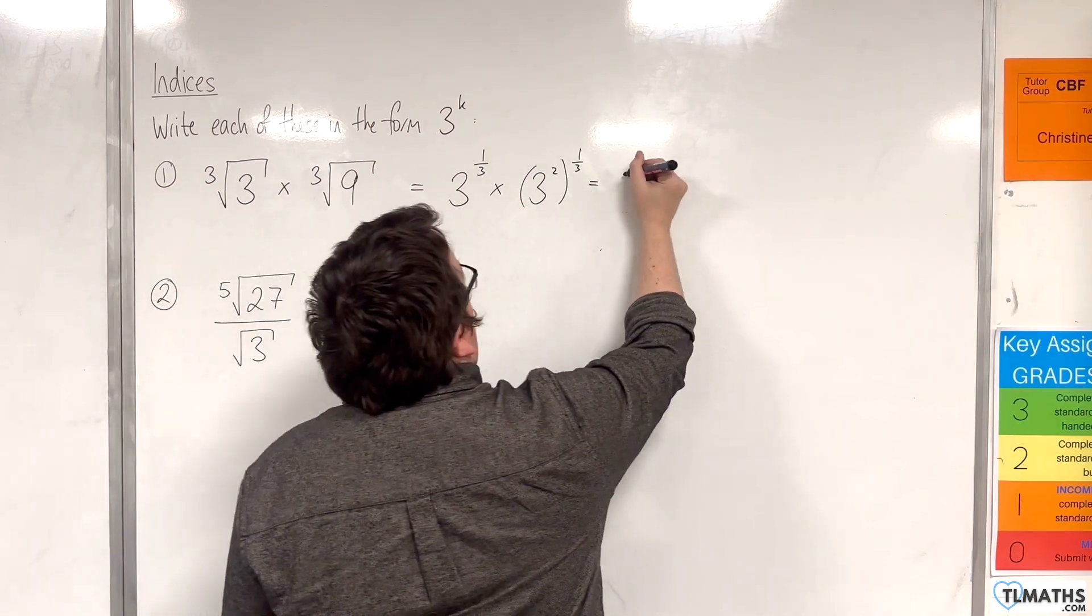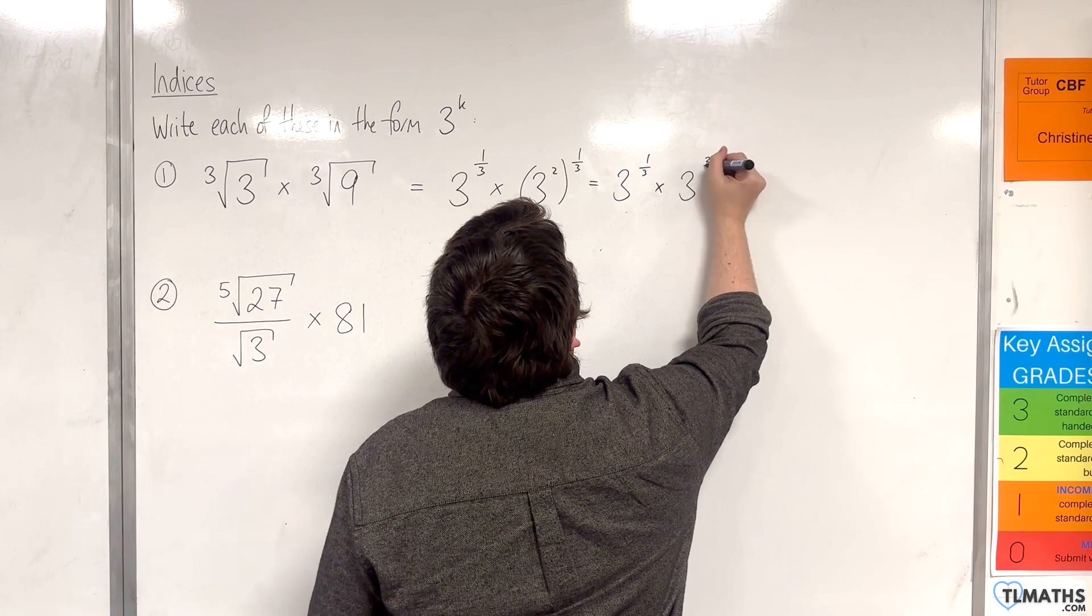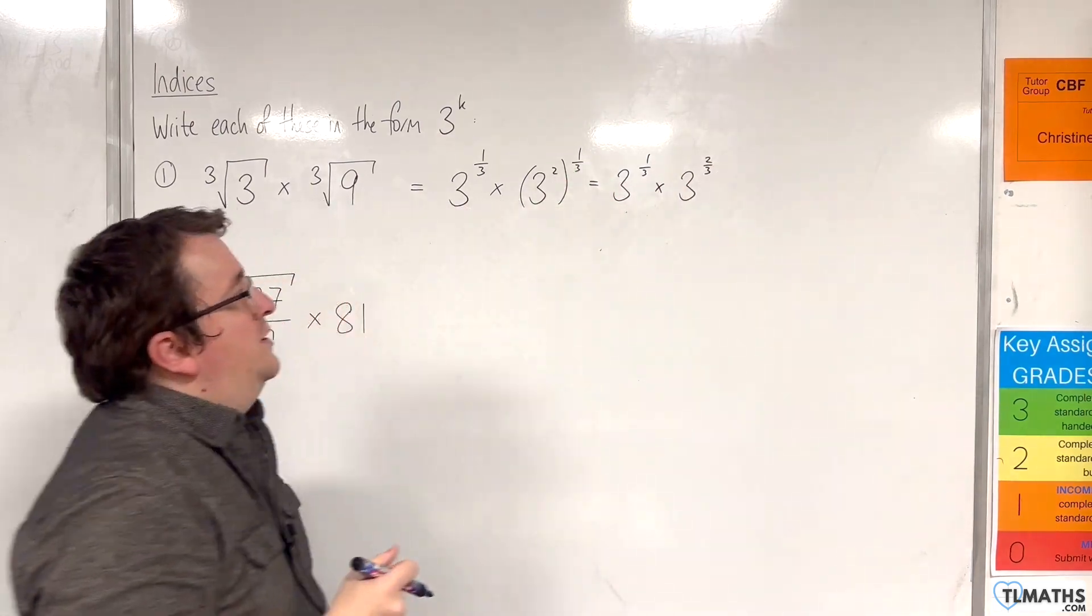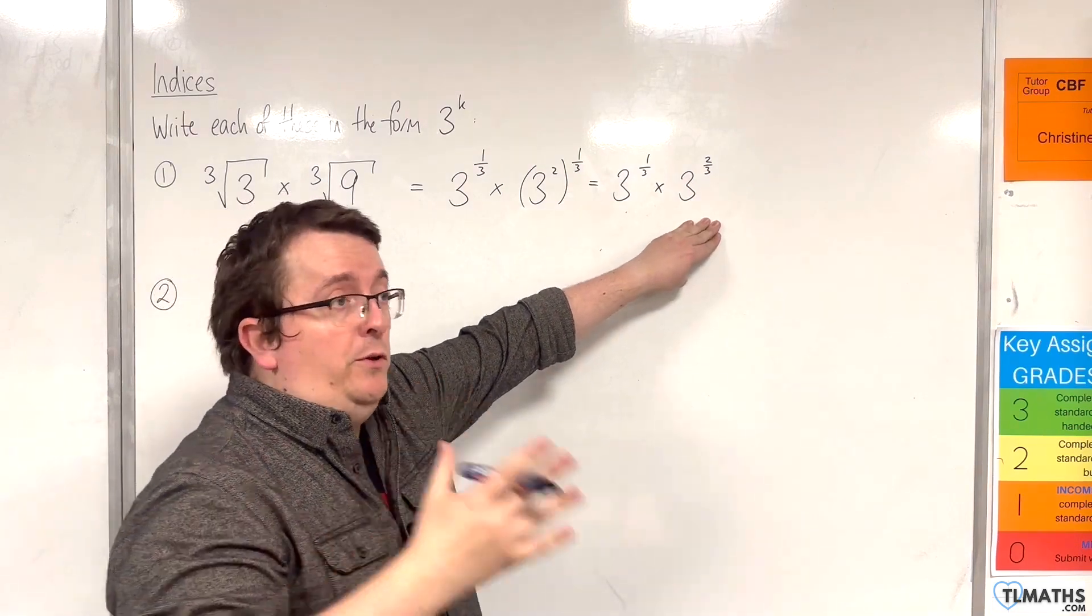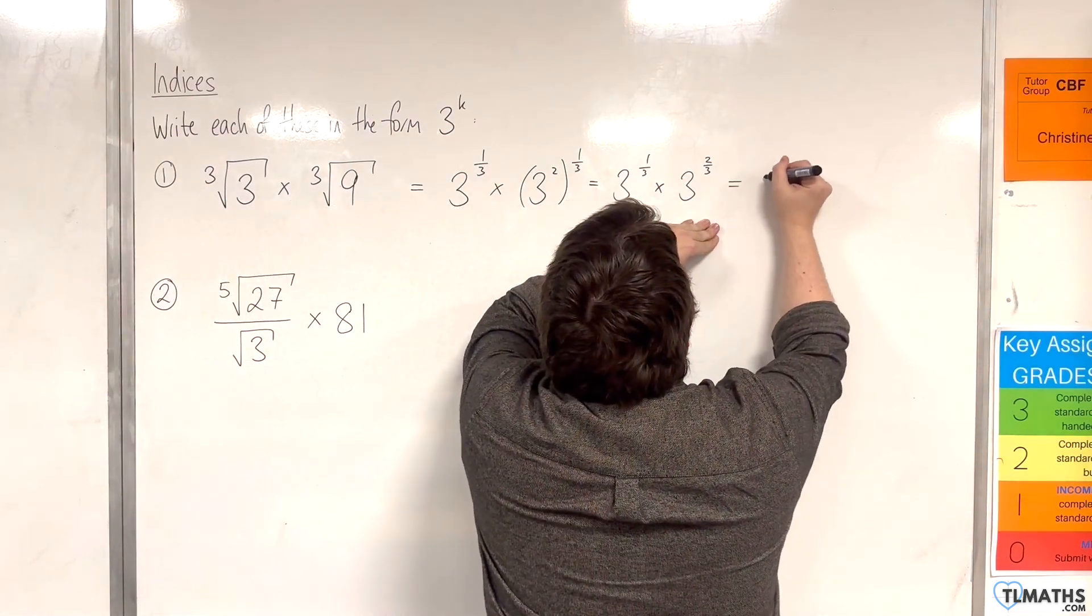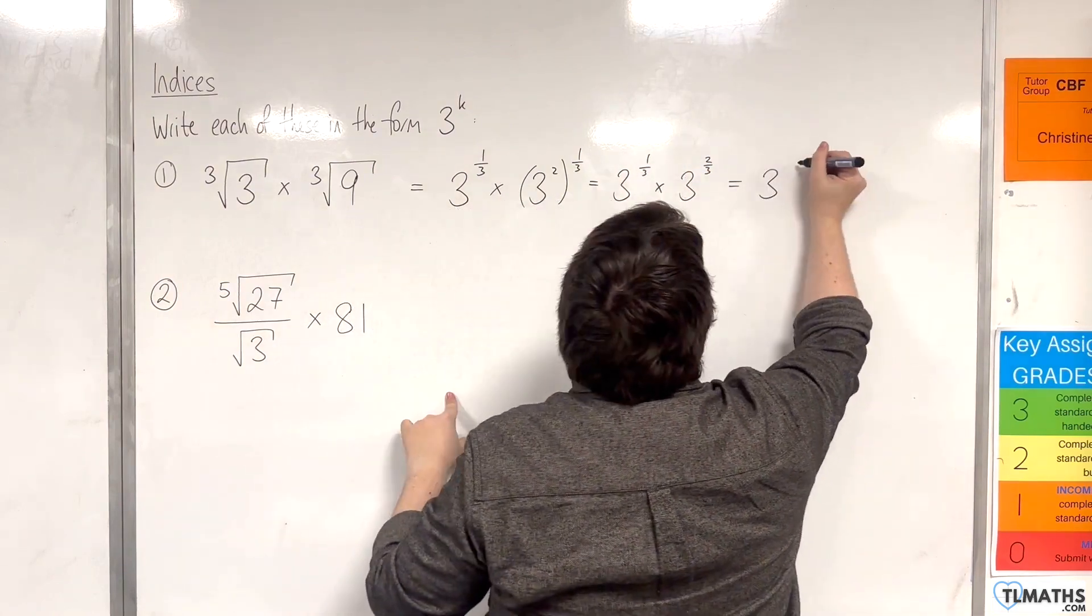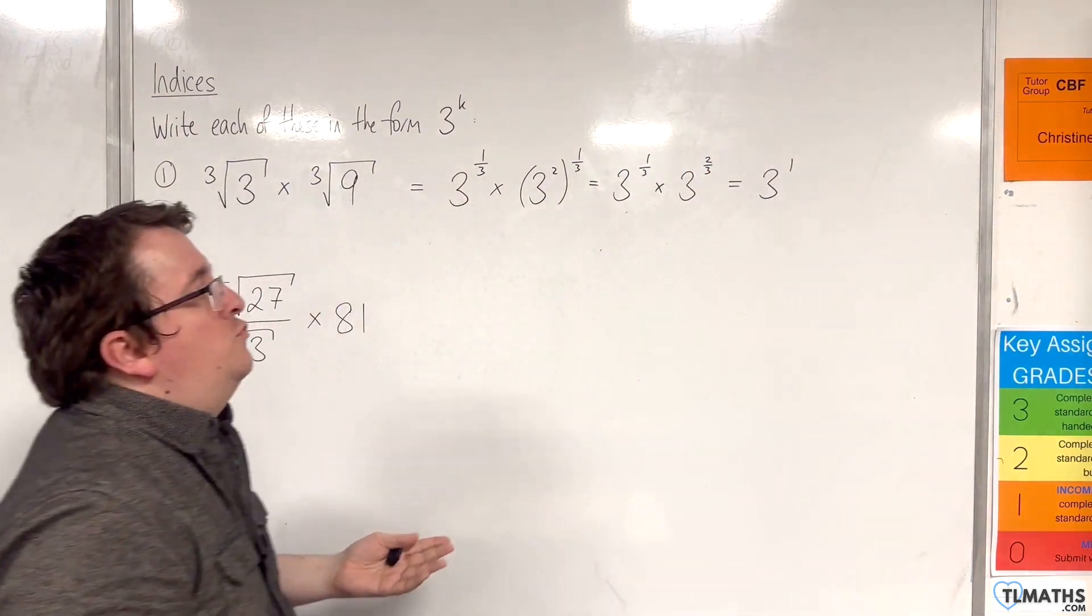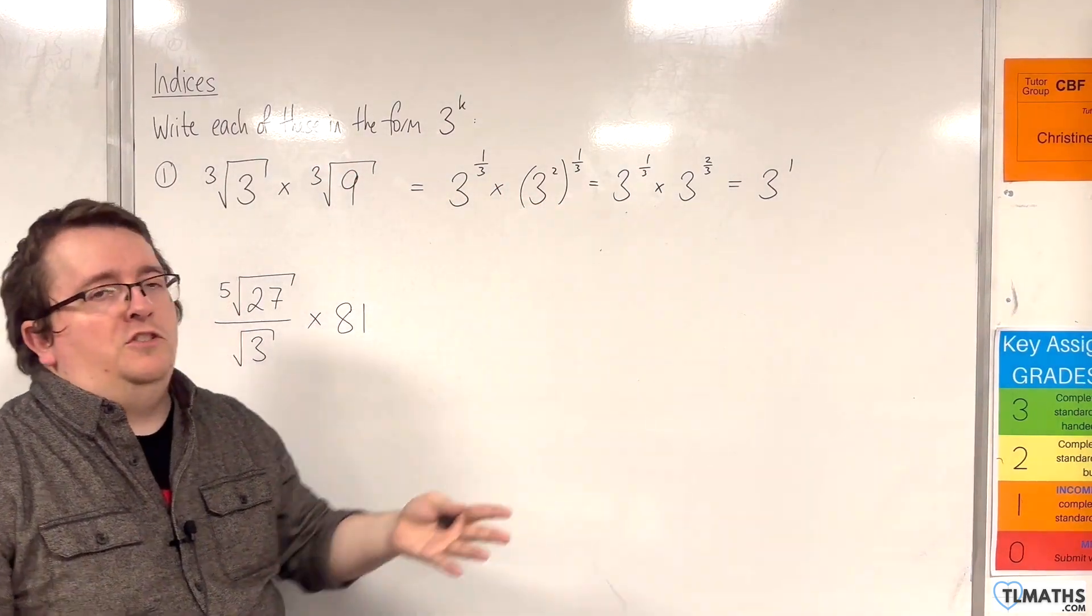So, we have 3 to the power of 1 third times by 3 to the power of 2 thirds, multiplying the 2 and the 3rd together. Now, we've got 3 to the power of 1 third times 3 to the power of 2 thirds, which is 3 to the power of 1, because we have 1 third plus 2 thirds. Now, you could just write that as 3, but because it says write it in the form of 3 to the k, I'll just leave it like that.